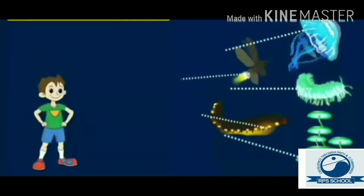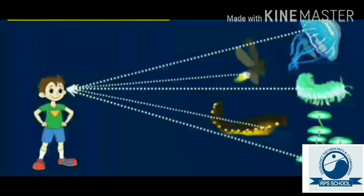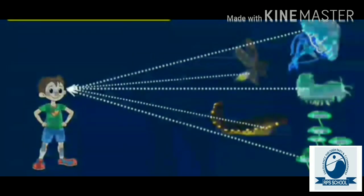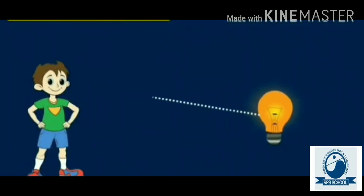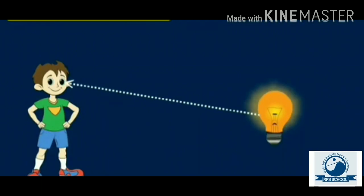Children, we see luminous objects because light emitted by them enters our eyes directly and we see. We can see this bulb because the light emitted by it is directly entering our eyes.